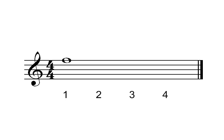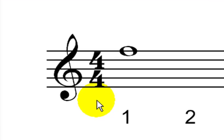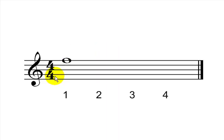First of all, let's take a look at the time signature. It's 4/4 time, which means that there are 4 counts of a quarter note beat in each measure, and the measure always ends with a barline, and this is an end barline.